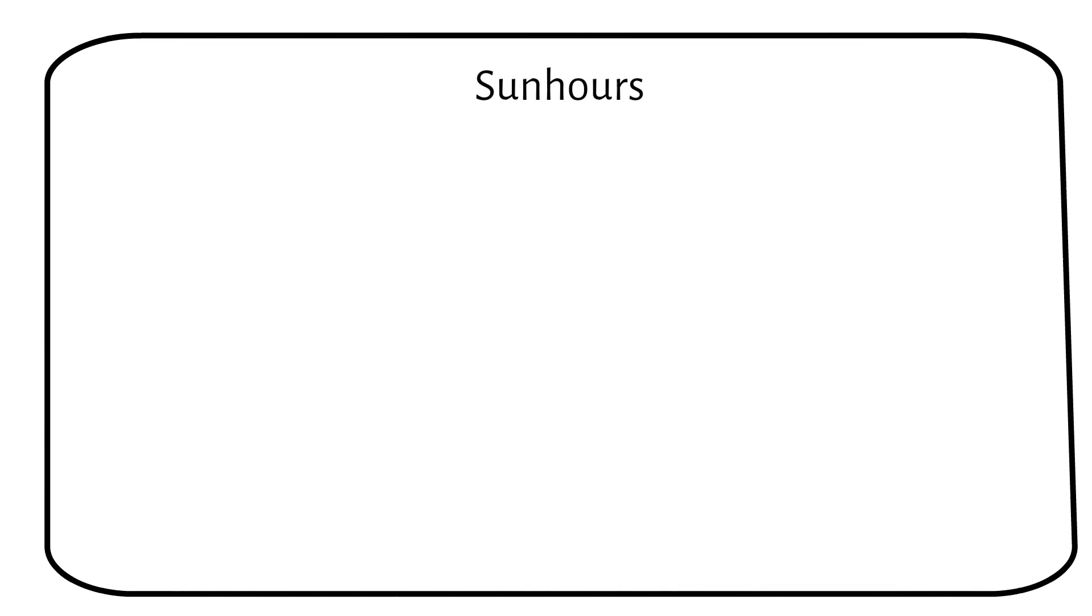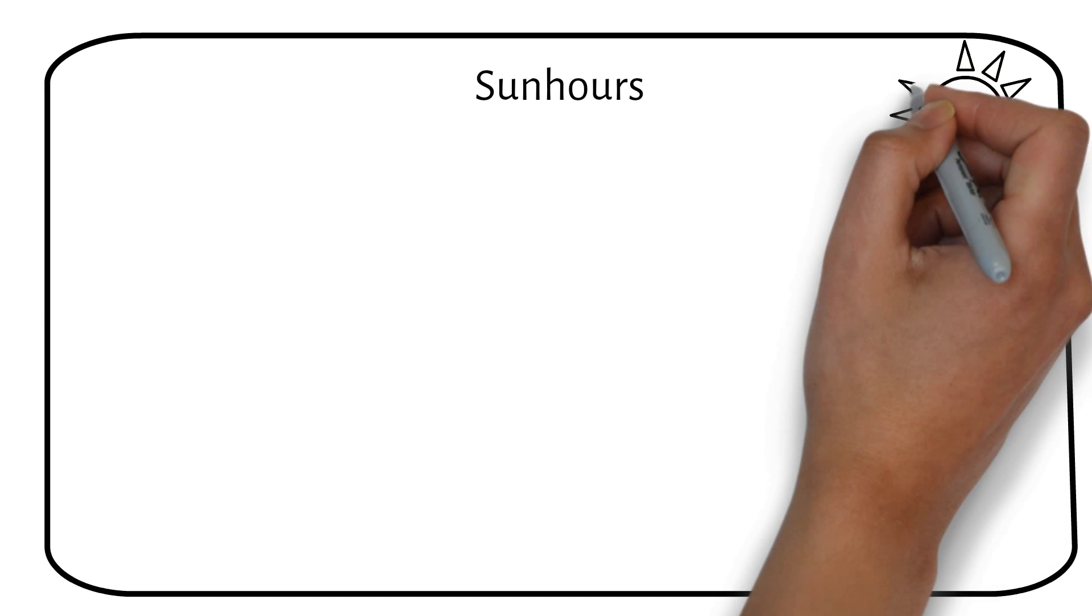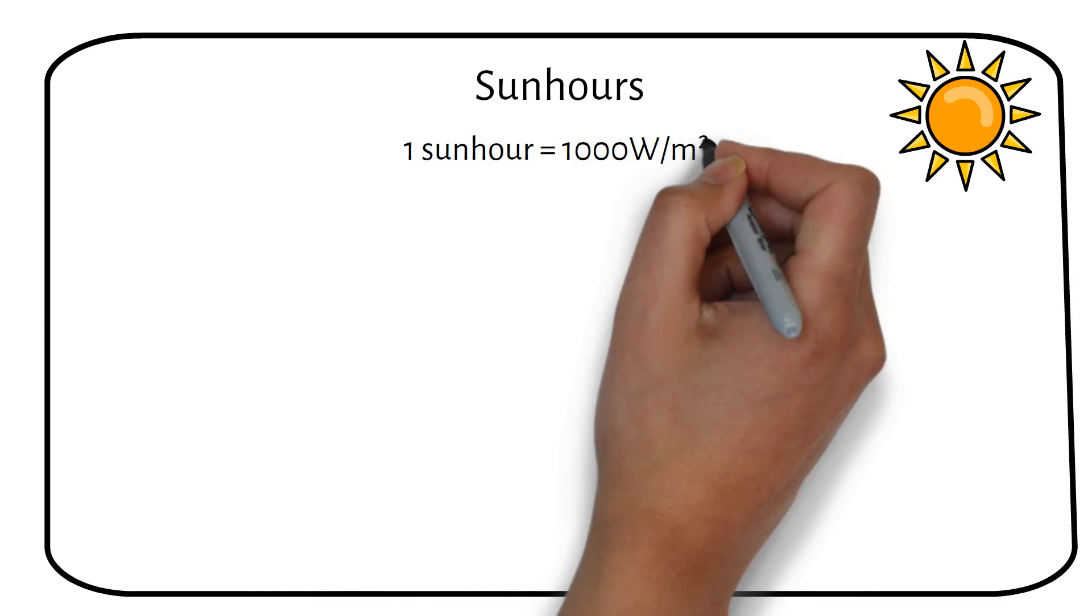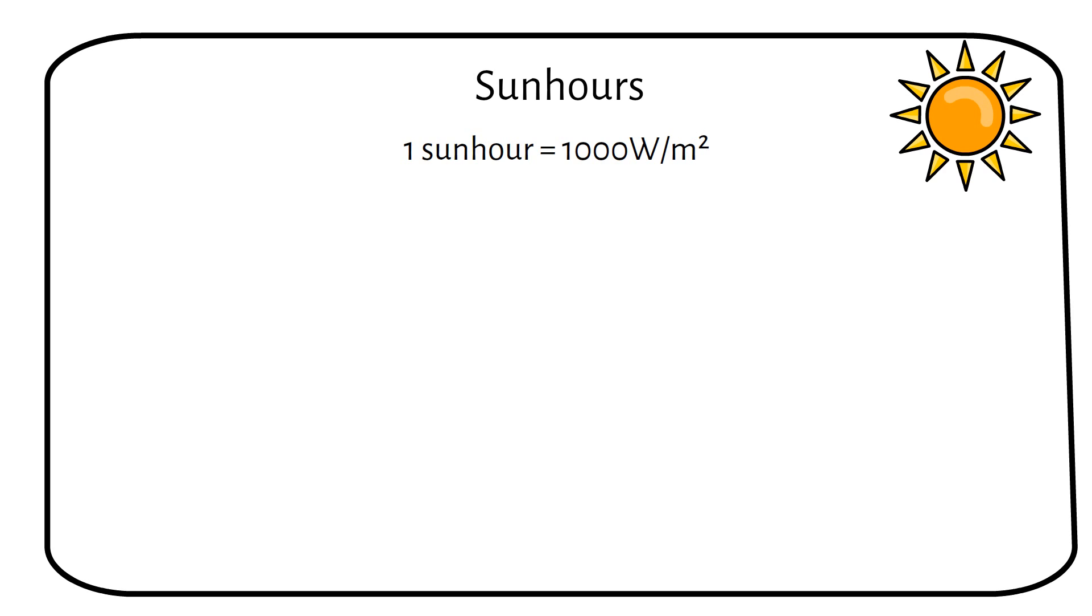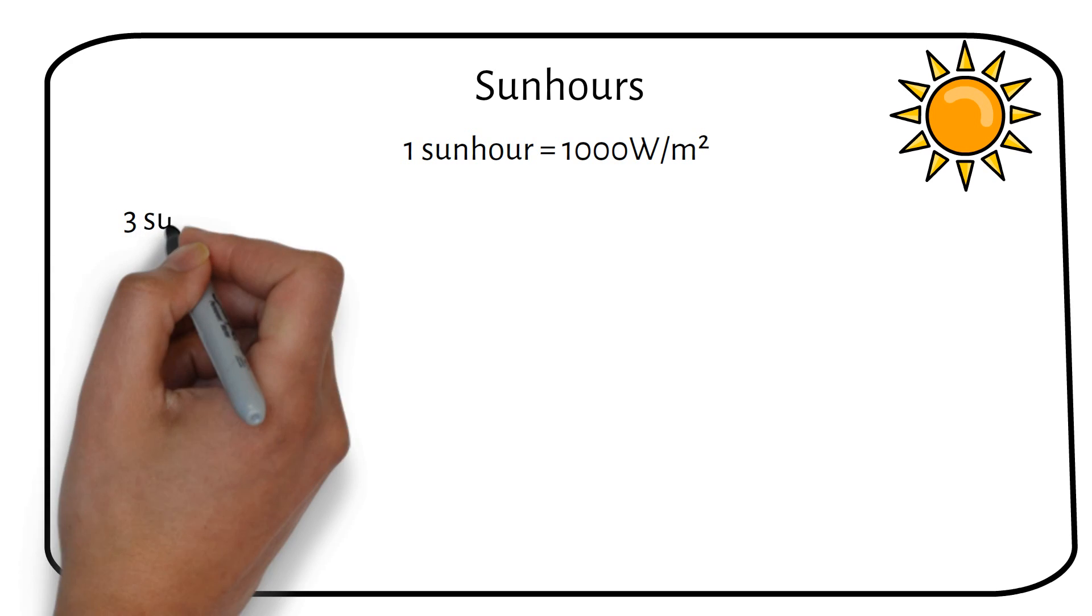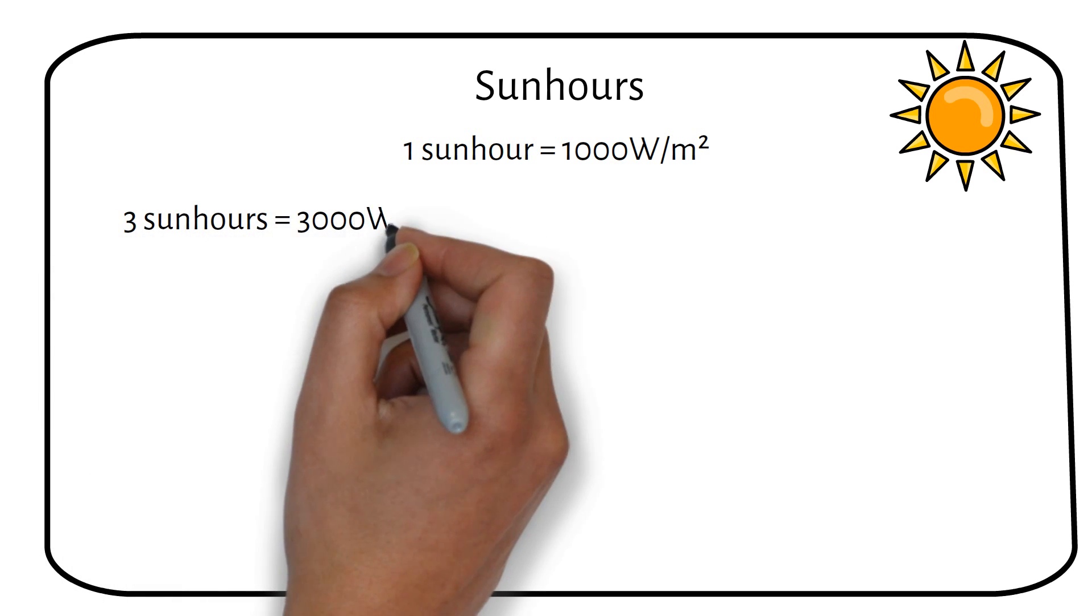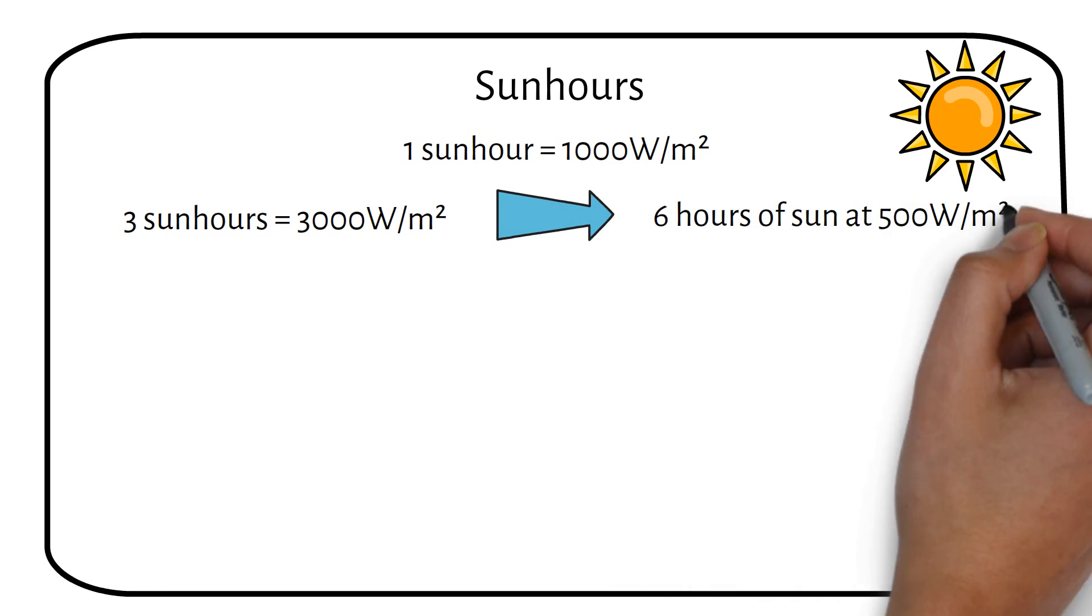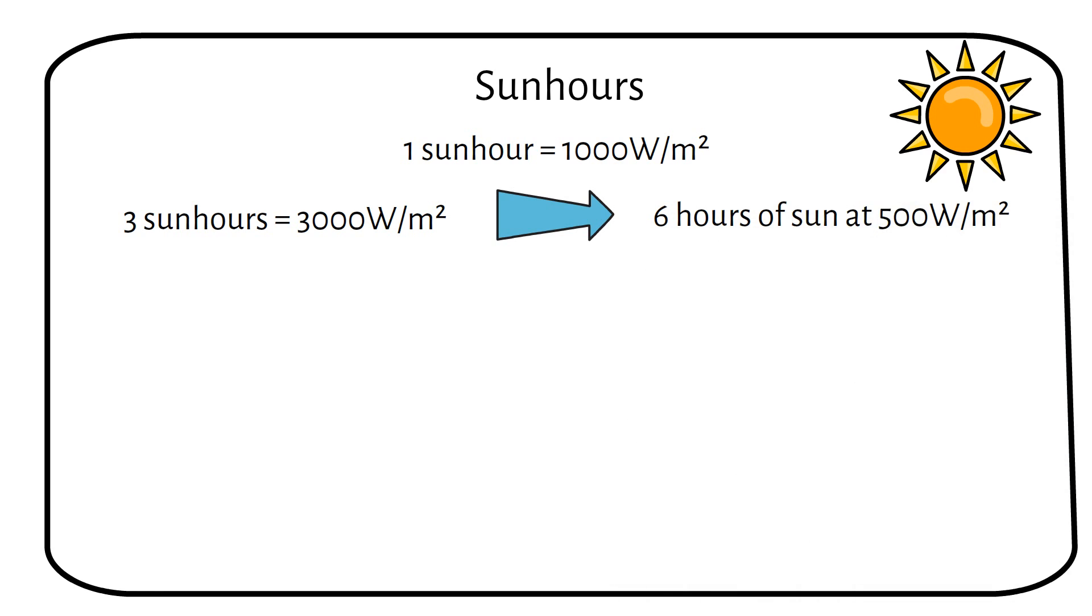Some people get confused about sun hours. Let me explain. One sun hour is 1,000 watts per square meter. You should not confuse this with the actual time the sun shines. Three sun hours is 3,000 watts per square meter per day, or 6 hours of sunshine at 500 watts per square meter. Sun hours varies by location and season.